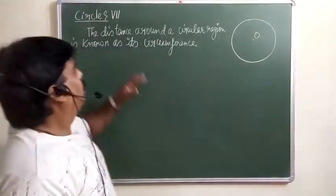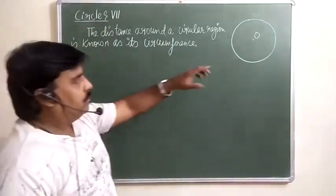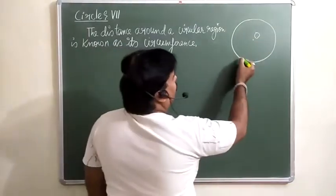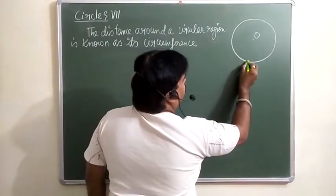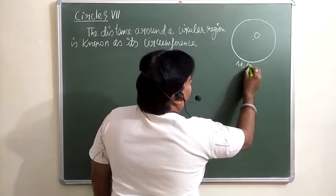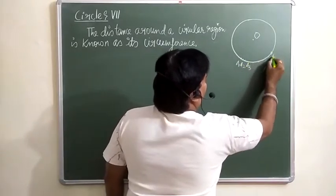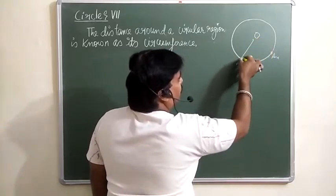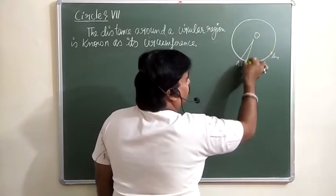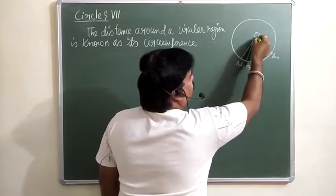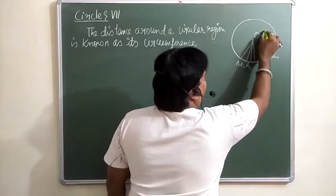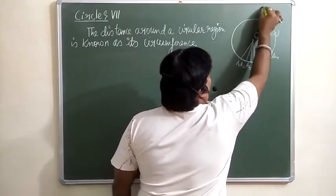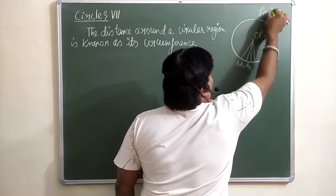Hello everybody. Now we will discuss about the circle. The first question is: what is the circle? A circle is the collection of points. These points are equidistant from a fixed point. This fixed point is known as the center.